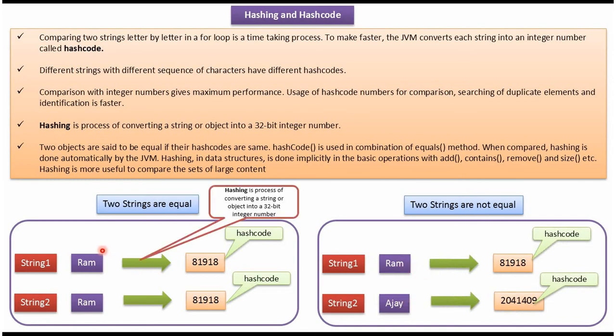The process of converting a string to an integer number is called hashing. And this is what hashing and hashcode are about. Thanks for watching, and see you in the next one.